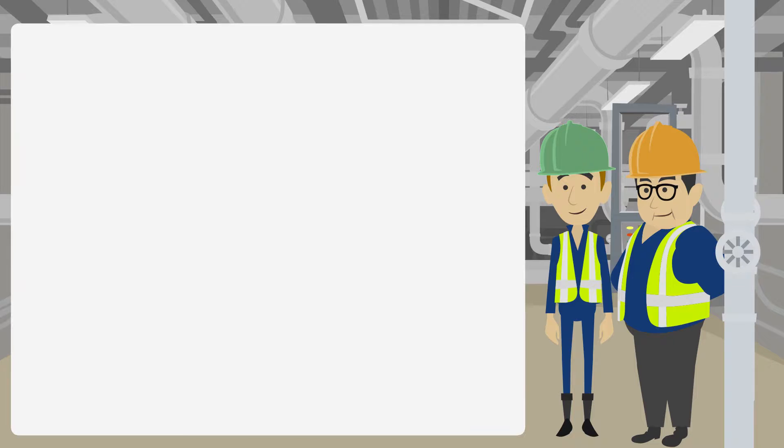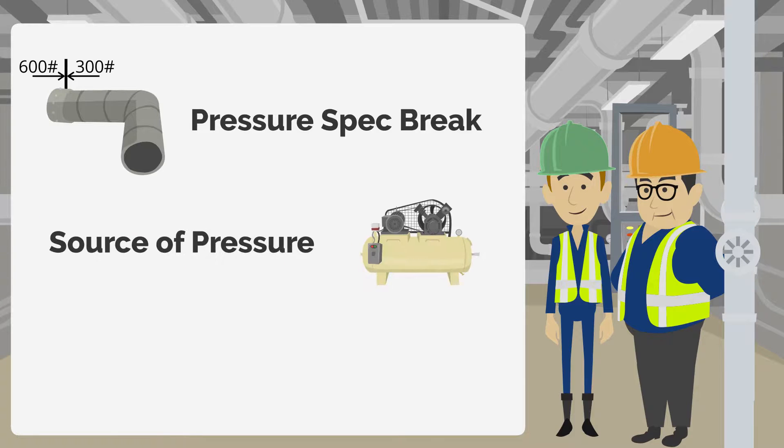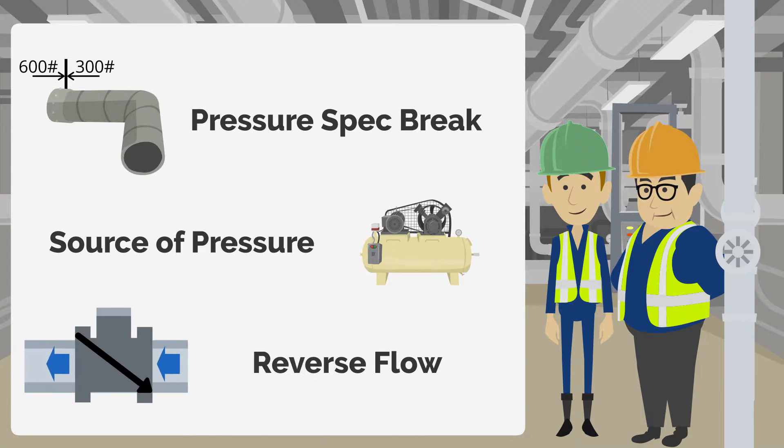Reverse flow overpressure is possible if the following are true. First, there is a low pressure to high pressure spec break. Next, there is a pressure source downstream of the spec break capable of producing pressures above the upstream rated limit. And finally, if flow and pressure are capable of traveling backwards, events like a pump being down or a flow path being blocked will stop driving flow in the forward direction.